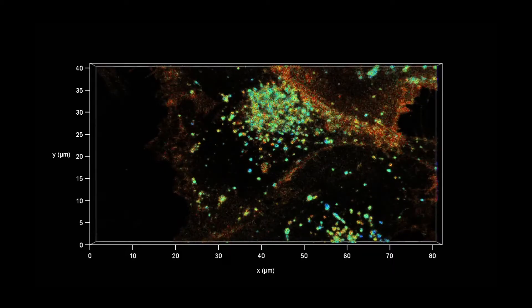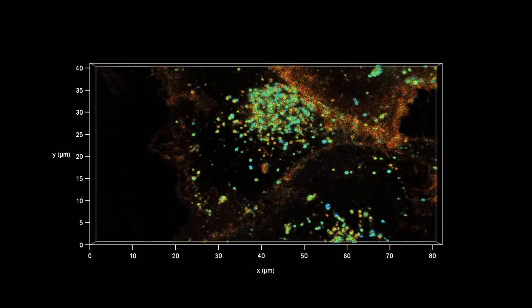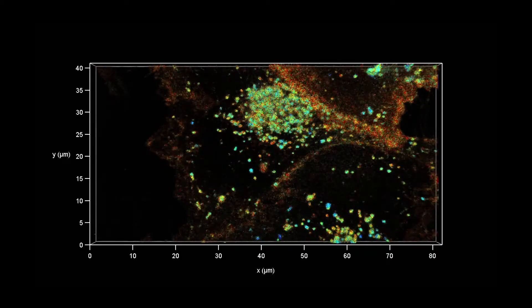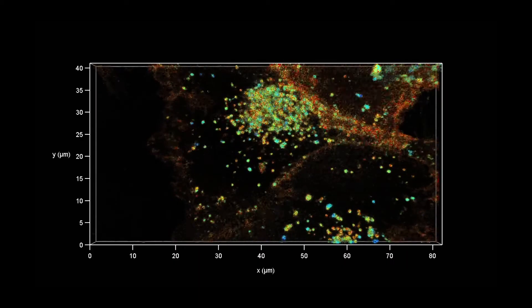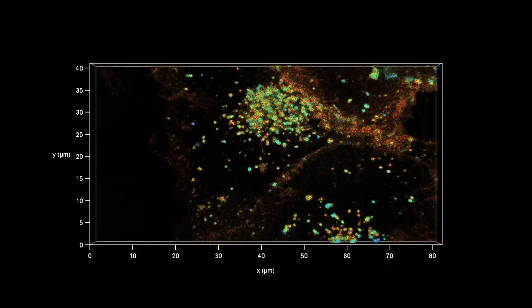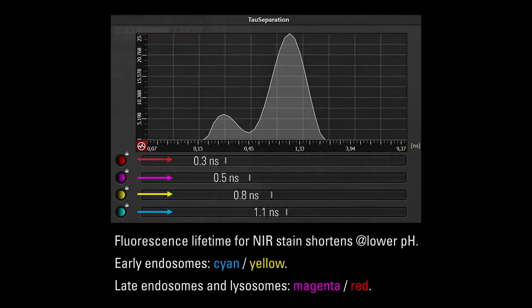And this information comes combined with the fluorescence intensity, as mentioned, measured as photon counts. TauContrast gives you first-hand information about the functional state of the cell. And we can do more.